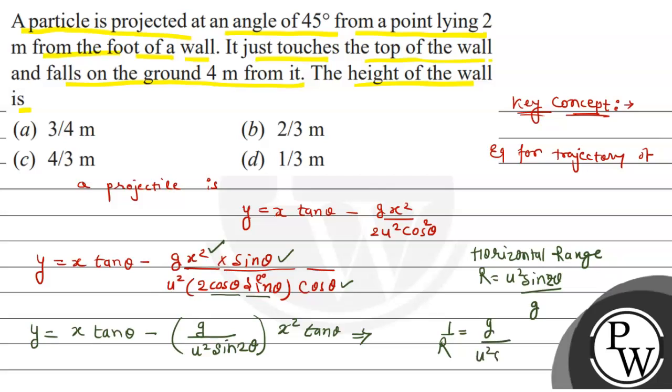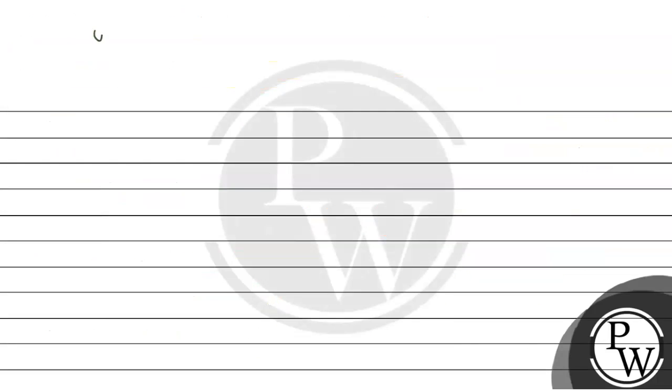In this equation, g upon u squared sin 2 theta, you can write this as 1 by R. So the equation becomes y equals x tan theta times 1 minus x upon R. Taking x tan theta common, we get y equals x tan theta in bracket, 1 minus x upon R. This is the form we will use in calculation.